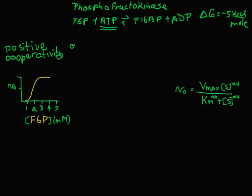Enzymes with positive cooperativity are more sensitive to substrate, and that sensitivity is described by the Hill slope, which for positive cooperativity is greater than 1. Fructose 6-phosphate is actually an allosteric activator of the enzyme because when it binds, it makes the other catalytic sites have a higher affinity for the substrate. ATP is an allosteric inhibitor of phosphofructokinase — when ATP is added, it stabilizes the inactive form and shifts the curve to the right, decreasing the velocity of the reaction at a given substrate concentration.